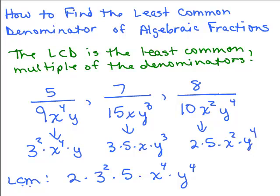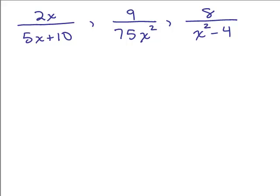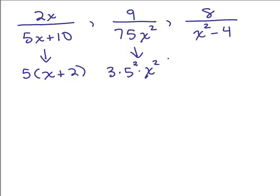You simply write the prime factorization using exponents if you've got a factor more than once. Let's do another one. We need to factor each denominator, looking for the least common denominator of all three rational expressions. For the first, 5x plus 10 factors as 5 times x plus 2. For 75x squared, that's 3 times 5 squared times x squared. And for the last one, we have a difference of two squares, so that's x plus 2 times x minus 2.